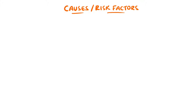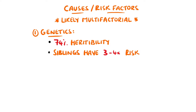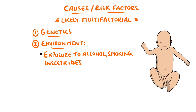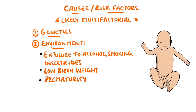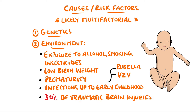Genetics are thought to play a role in the causes, with a 74% heritability, which is roughly how much someone's genes affect differences in their traits. Siblings of children diagnosed with ADHD are 3 to 4 times more likely to also suffer the condition. The environment also has a significant impact, including factors related to pregnancy and birth, such as exposure to alcohol, smoking, or insecticides as a fetus. Low birth weight and premature births are also risk factors, as are infections up to early childhood such as rubella or varicella zoster virus. Some studies quote 30% of children with traumatic brain injuries later developing ADHD.